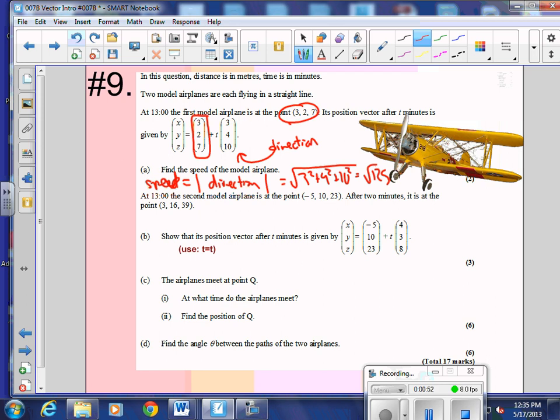Now, at 1 o'clock or 1,300 hours, a second plane leaves. So here is your starting point, and then it goes, after 2 minutes, it's at a new point. How could we find out the direction that it goes?